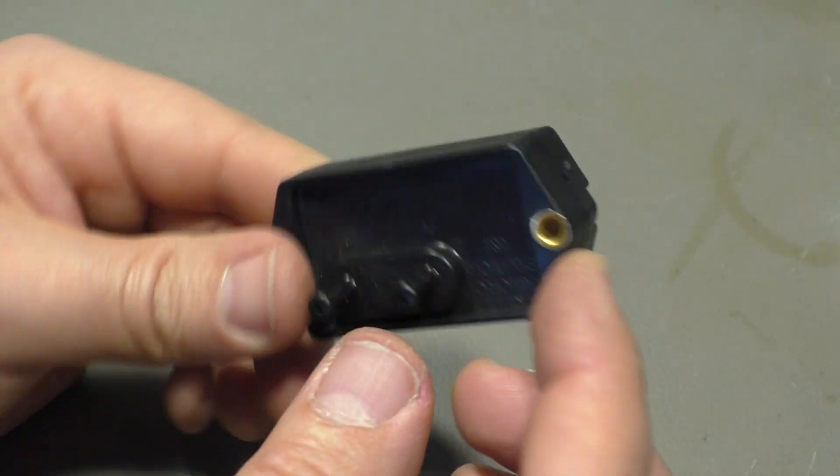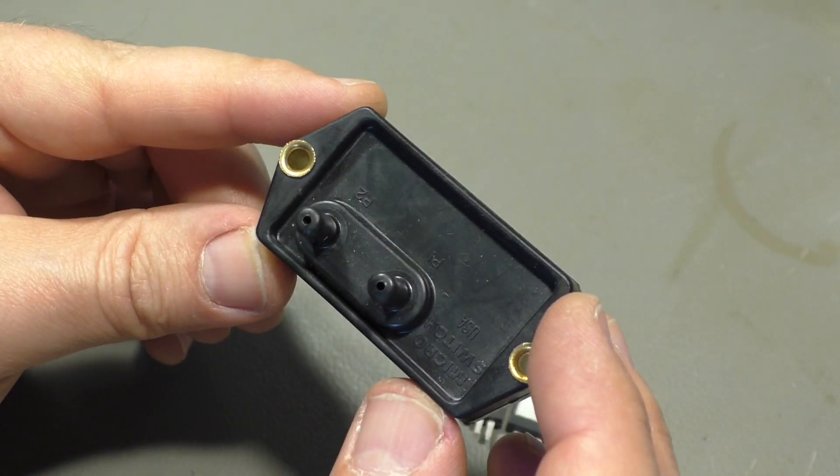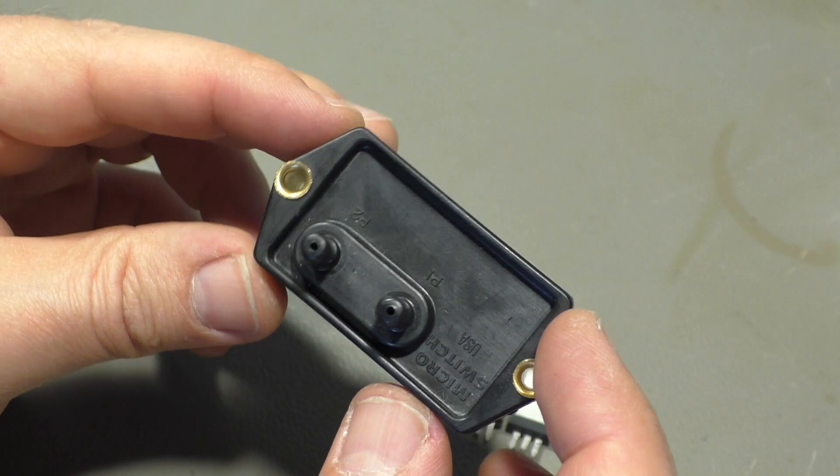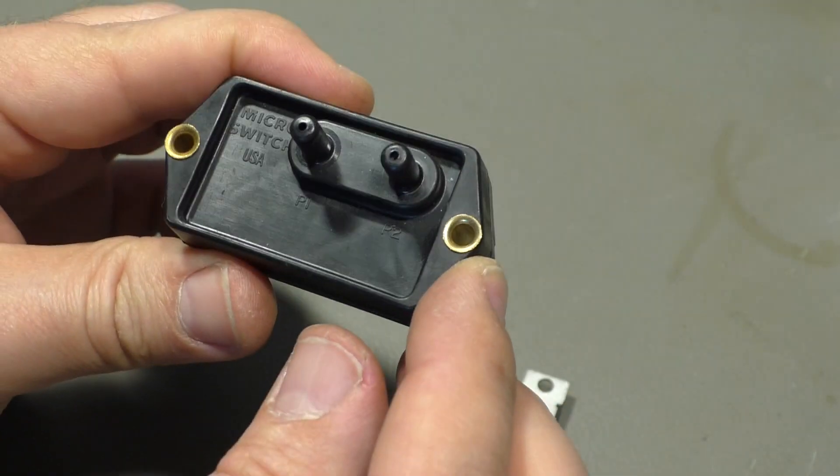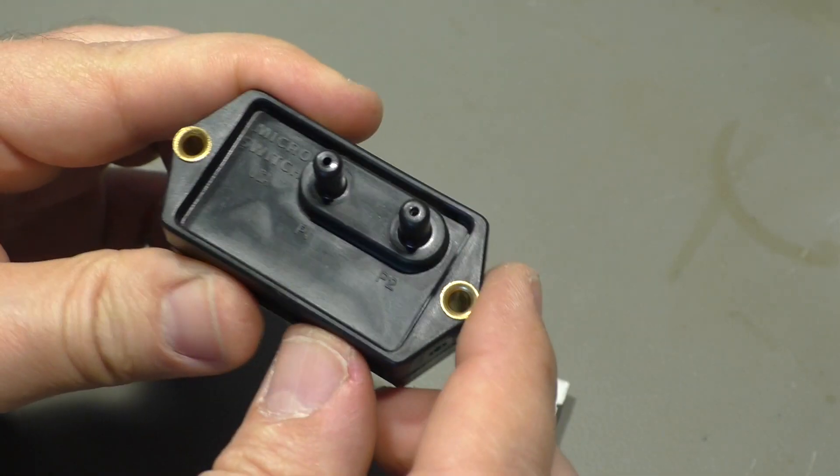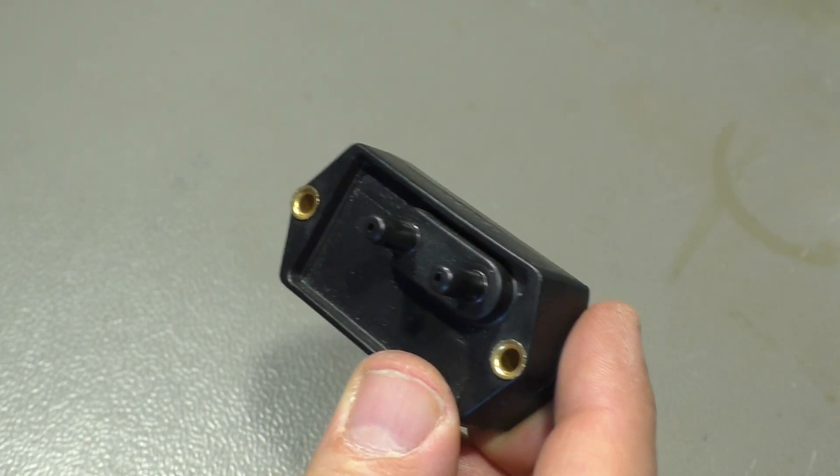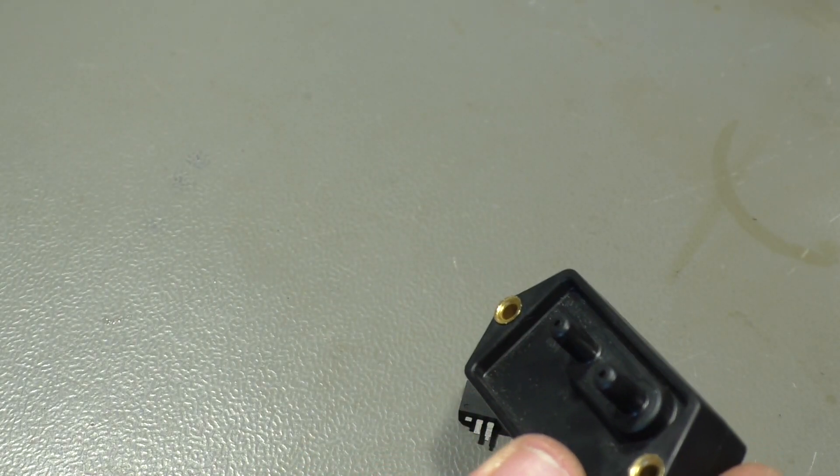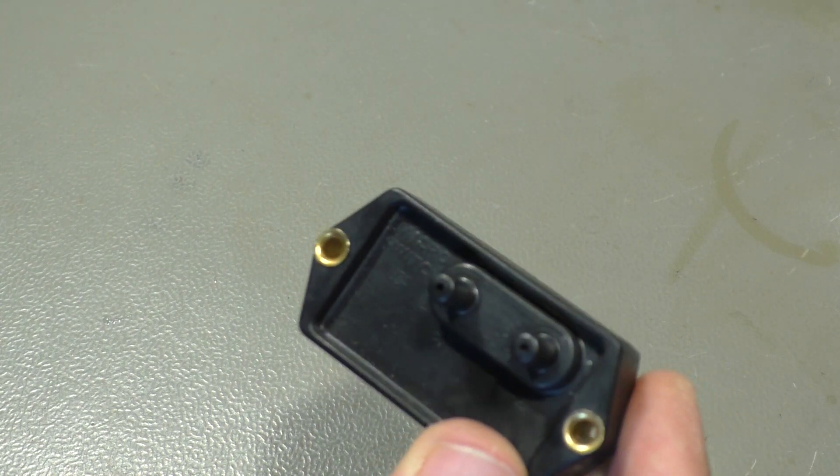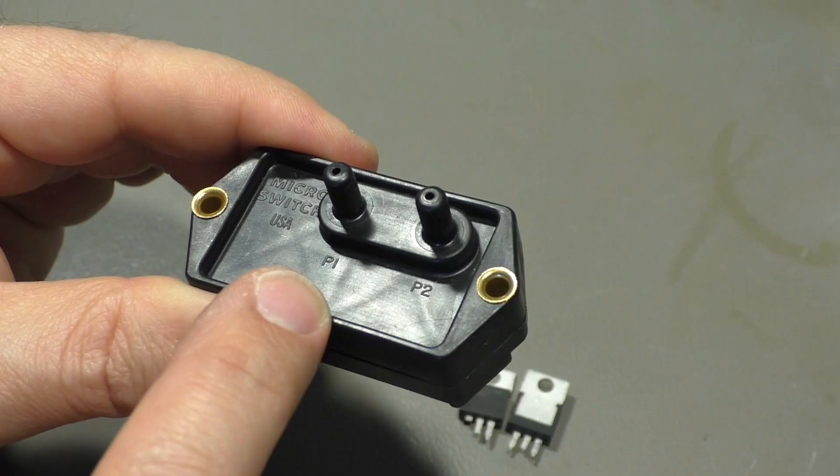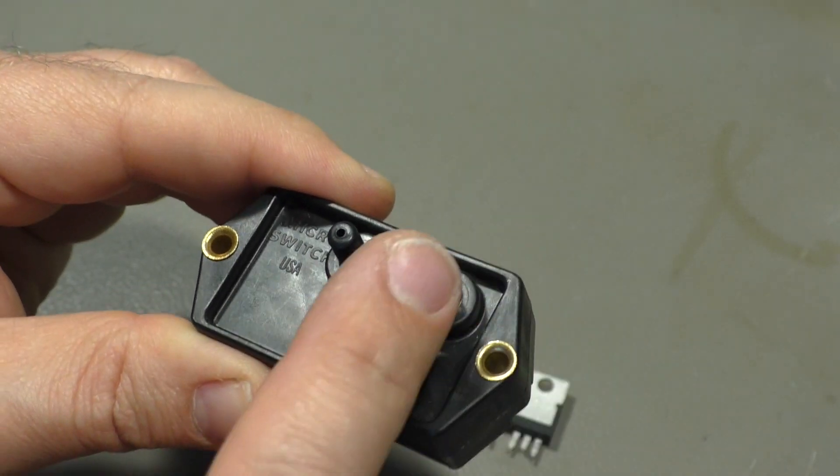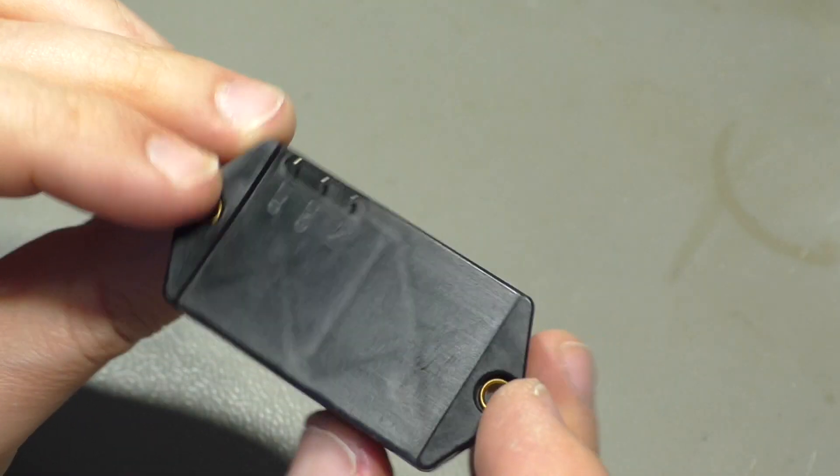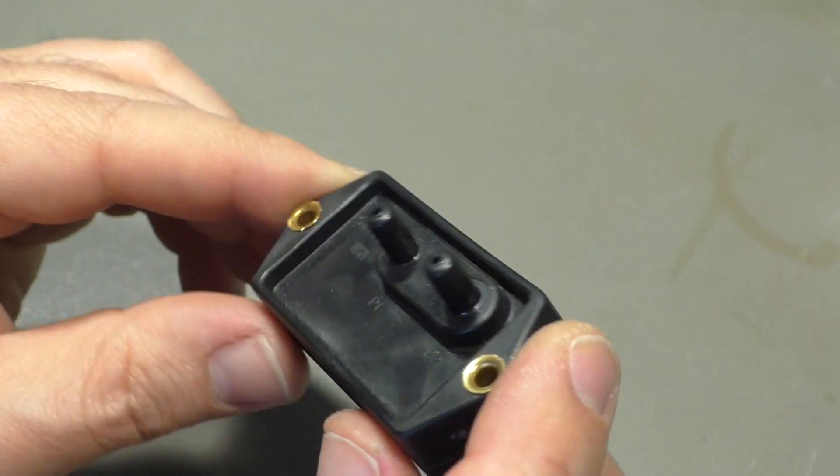And we have a pressure sensor or a vacuum sensor depending on which port you connect. Port one is for negative pressure and port two is for positive pressure, and this one comes from a medical device.